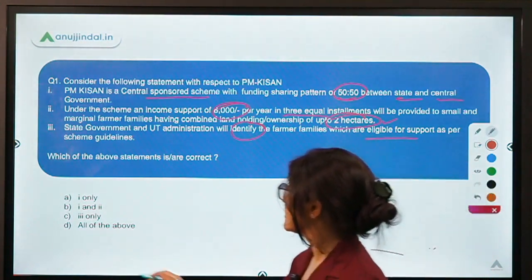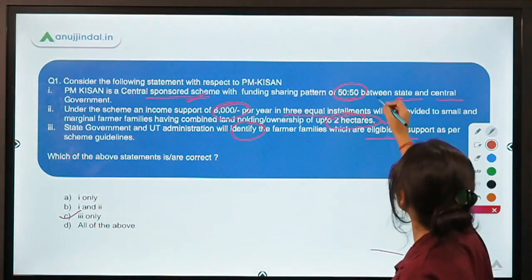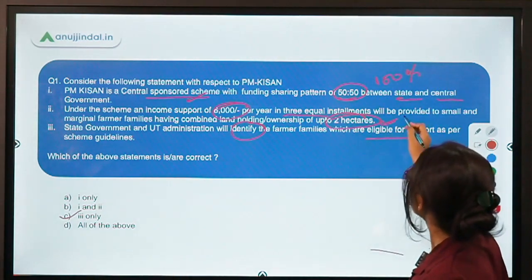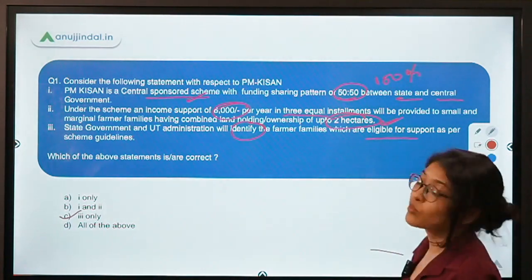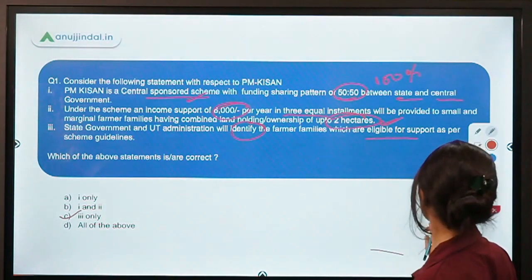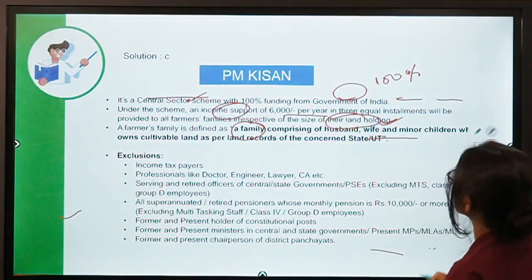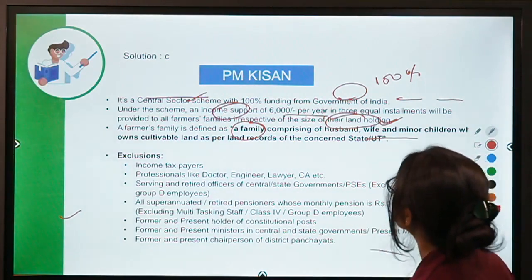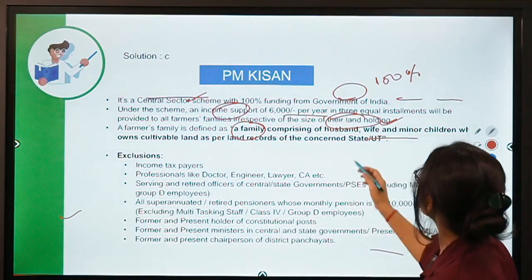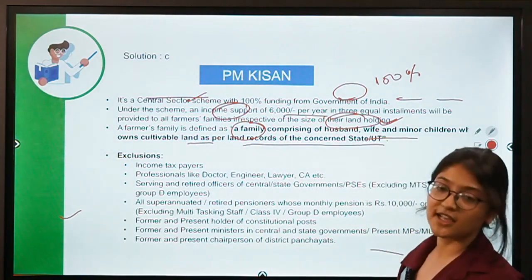The correct answer here is C, because PM Kisan is not a centrally sponsored scheme but a central sector scheme with 100% share from the central government. Also, earlier it was meant for small and marginal farmer families but now it is universal — all farmers are covered. A farmer family is defined as comprising husband, wife, and minor children who own cultivable land as per land records of the respective state.